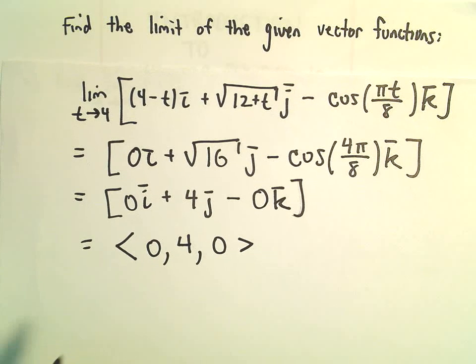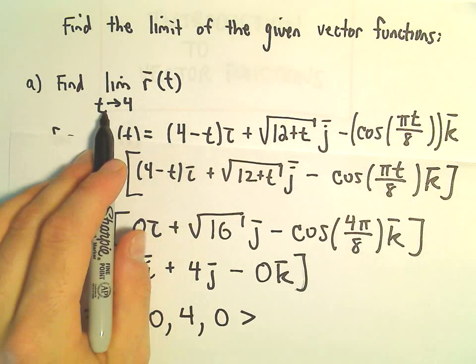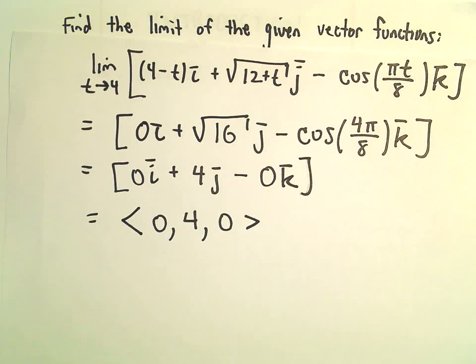That will be the limit of the vector-valued function as t approaches positive 4.